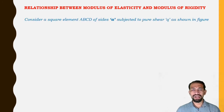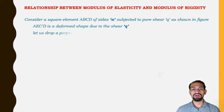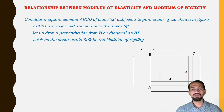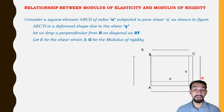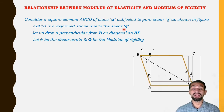Consider a square element ABCD of side A subjected to pure shear, as shown in the figure. The square element has sides ABCD. Pure shear Q is acting on all four sides. AECD is the deformed shape due to shear Q.